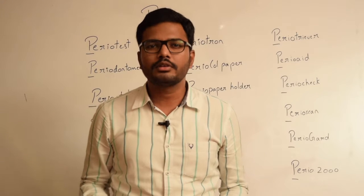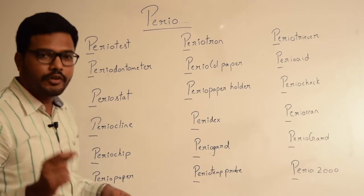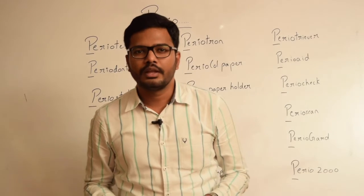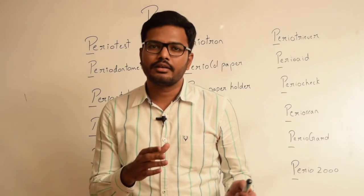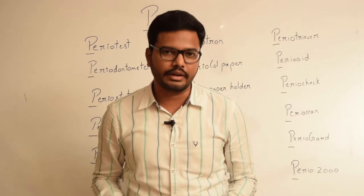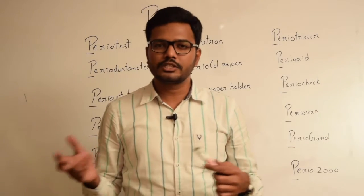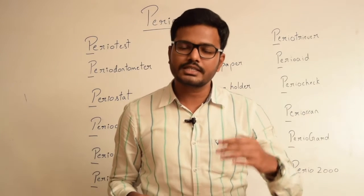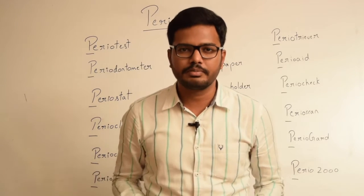Now coming to the next term, periostat. Periostat is 20mg doxycycline available in capsule form. It has anti-collagenase activity and it's used for host modulation as an adjunct to scaling and root planing. It's given twice daily and the main function of periostat is to reduce the collagenase activity which is elevated in GCF of periodontitis patients.